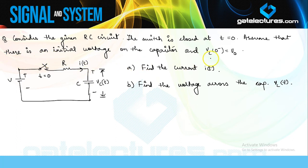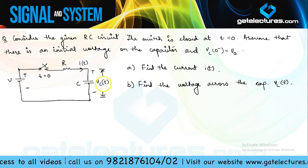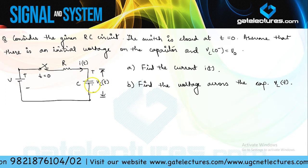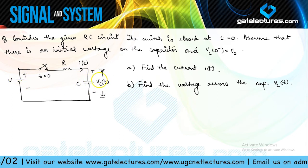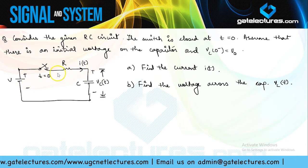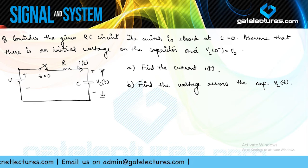However, this capacitor had an initial voltage equal to V₀. So when this switch closes, voltage transfer is going to take place — this capacitor will also act as a voltage source, and voltage transfer takes place through this resistance. They are asking you to calculate the current I(t).